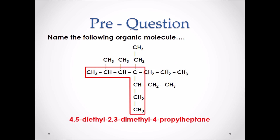Remember, when naming, branches get listed in alphabetical order. Our name is four comma five dash diethyl dash two comma three dash dimethyl dash four dash propyl heptane. All one word.